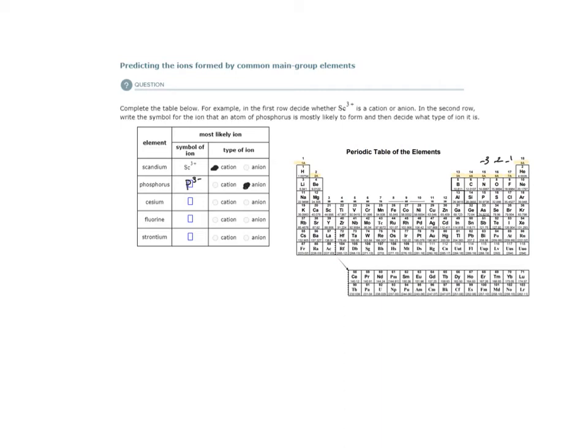Let's find cesium. Cesium is a group 1A metal, an alkali metal. The alkali metals as they form ions form ions with the charge of plus 1. The alkaline earth metals form ions with charge of plus 2. Aluminum forms an ion with a charge of plus 3.